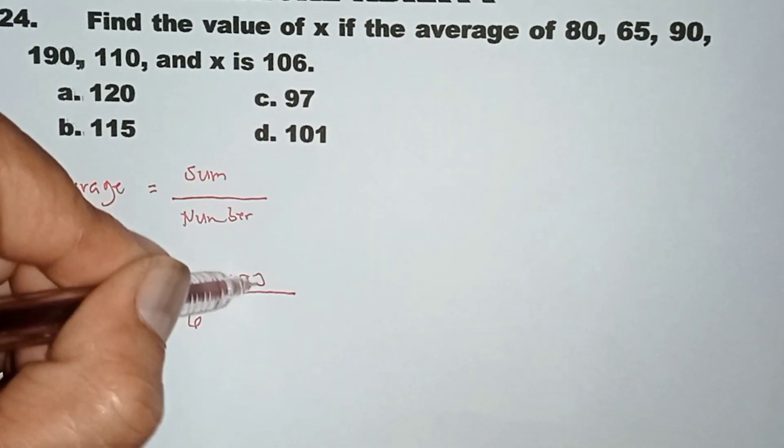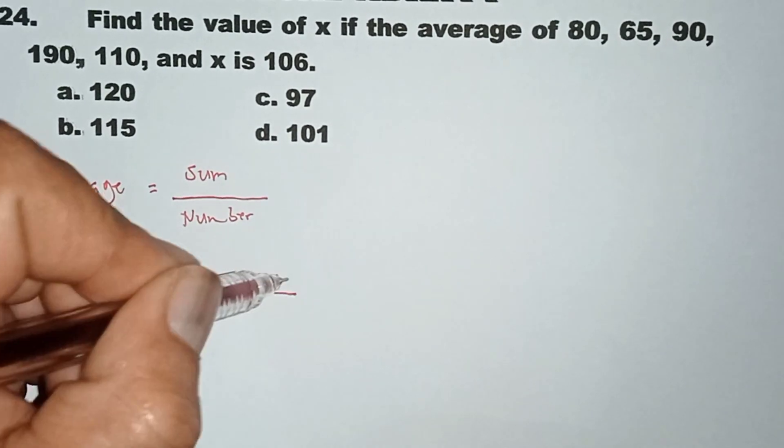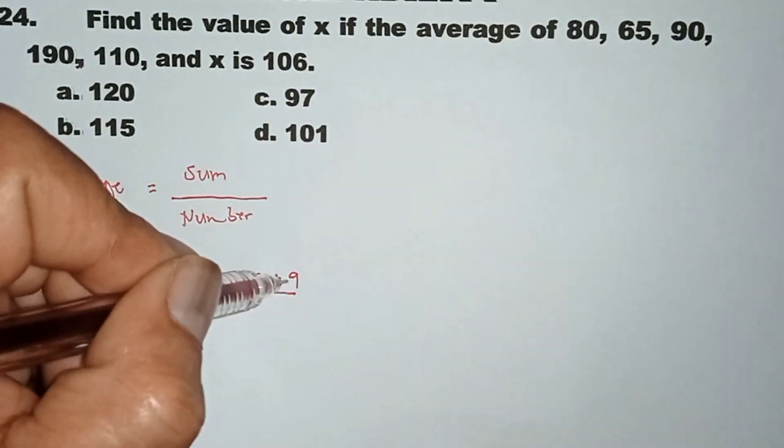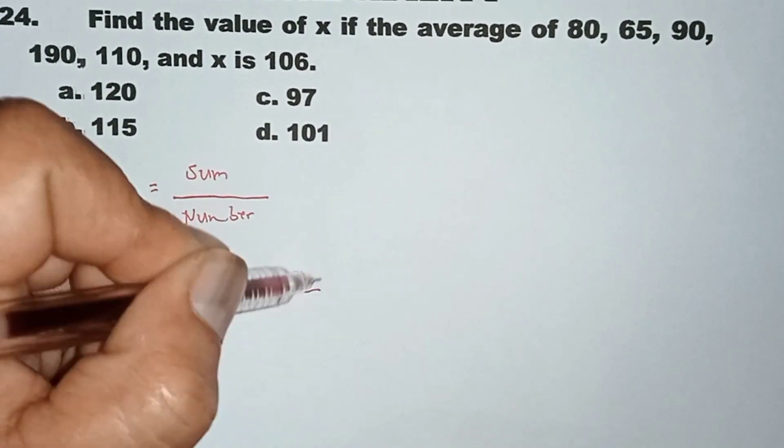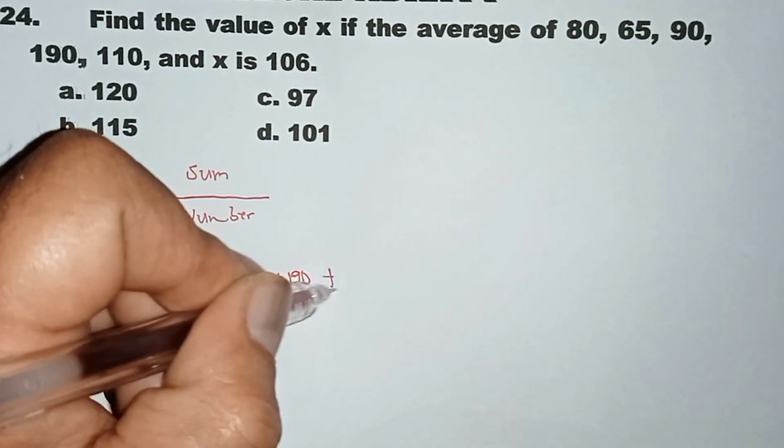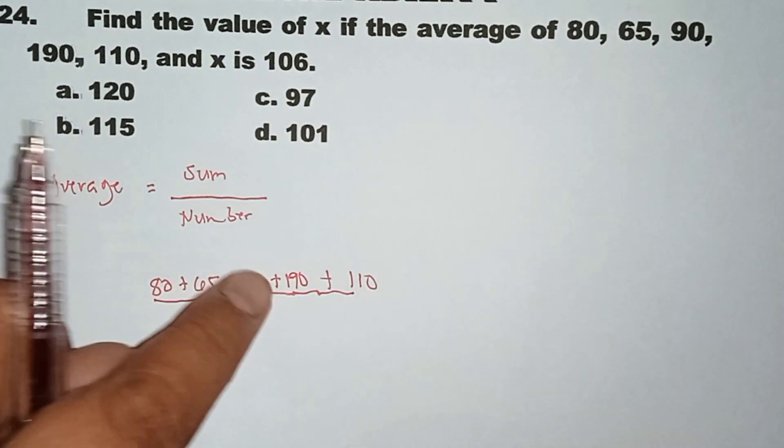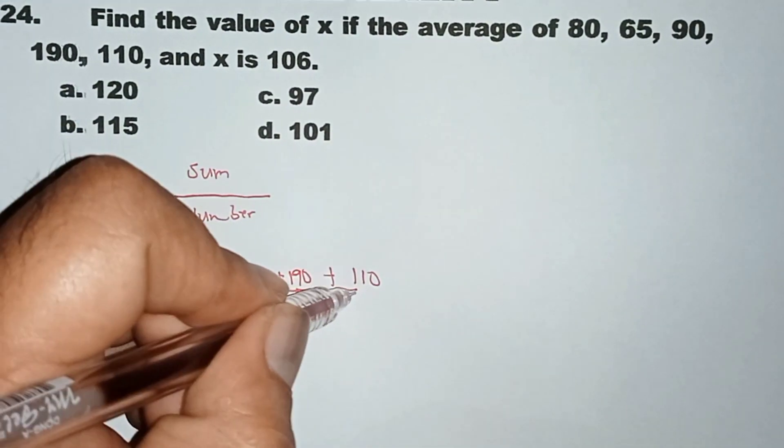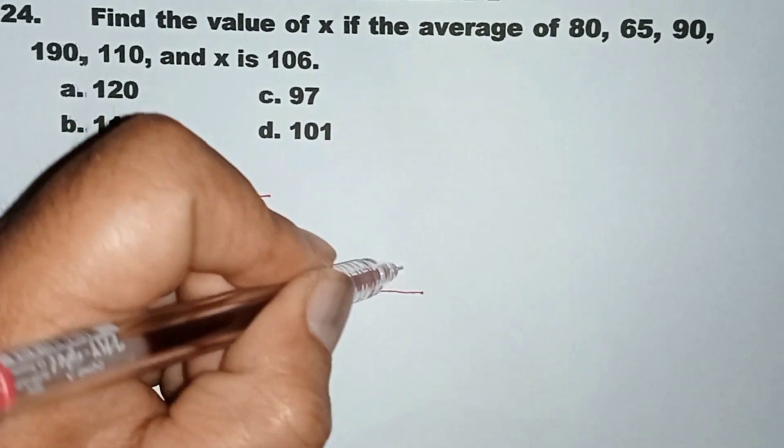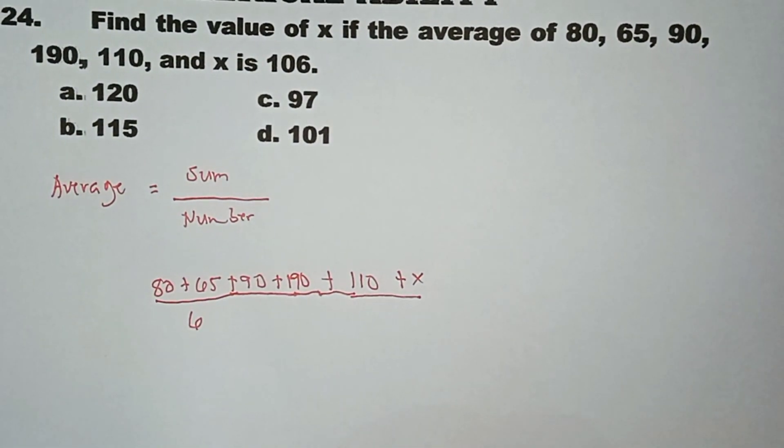90 plus 190 plus 110. Bibilangin lang natin: 1, 2, 3, 4, 5, and then the value of x. I-add kasi natin yung x, okay, plus x equals the average which is 106.